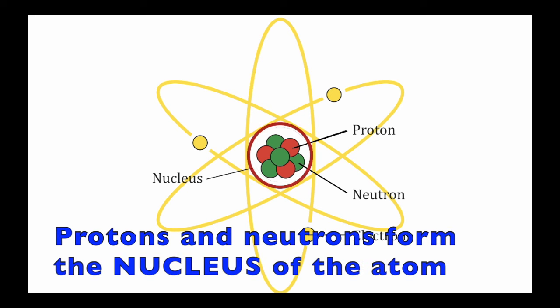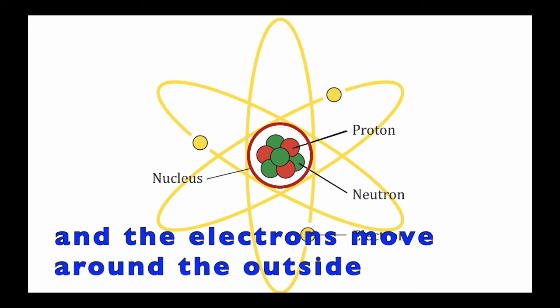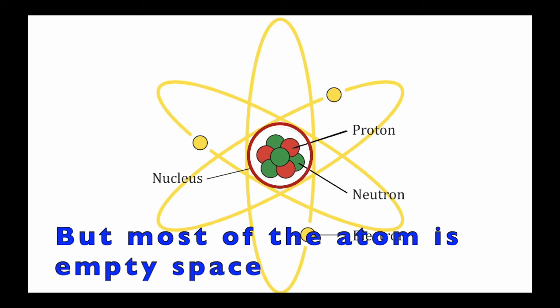Protons and neutrons form the nucleus of the atom, which is in the center. And the electrons move around the outside. But most of the atom is empty space.